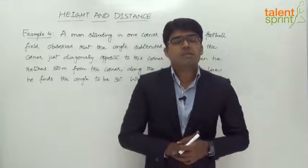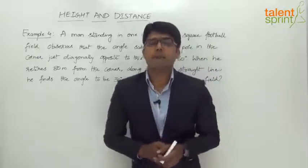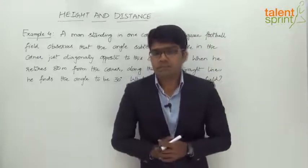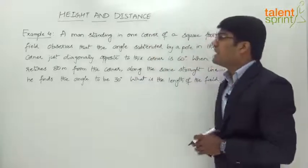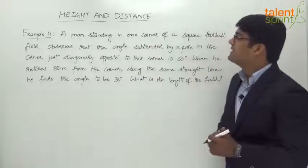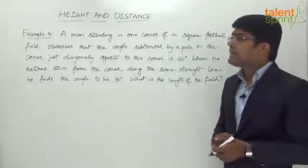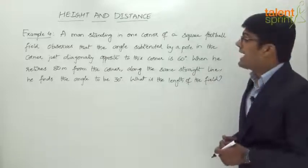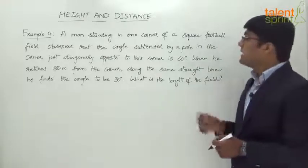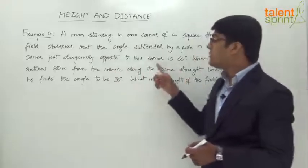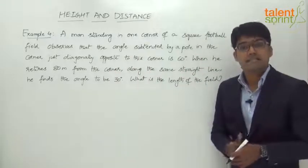Let us now look at a typical question from one of the earlier SSE CGL examples, and this is going to be our example number 4. The question here is: a man standing in one corner of a square football field observes that the angle subtended by a pole in the corner just diagonally opposite to this corner is 60 degrees.